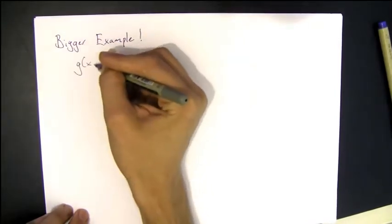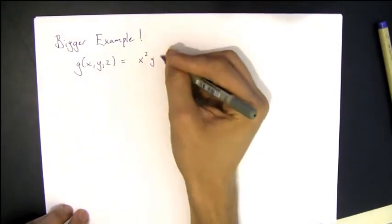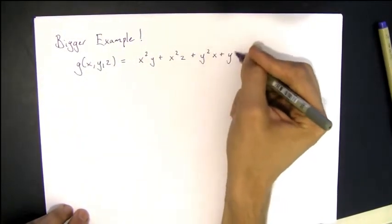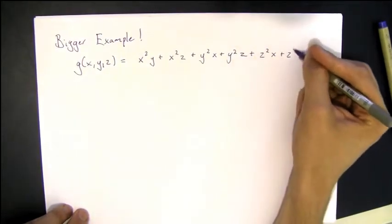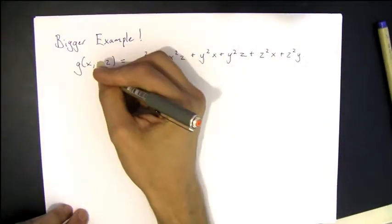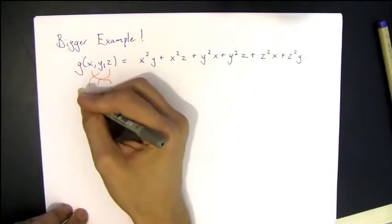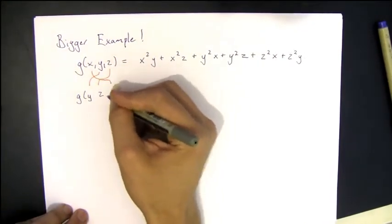So how about a bigger example? Let's say we take g of x, y, z equal to x squared y plus x squared z plus y squared x plus y squared z plus z squared x plus z squared y.